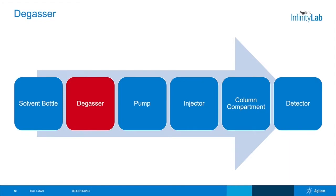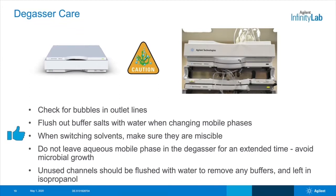Next, let's talk a little bit about the degasser in your LC system. Once we have our solvent properly prepared, it'll go into the degasser. Be aware that there are different degasser types that use different technologies. Some newer degassers perform better and are easier to flush due to design improvements. On most LC instruments, the mobile phase flows through a vacuum degasser, which might be a separate module or integrated into the pump. You will always want to keep an eye out for bubbles in the outlet lines, especially when changing solvents. If you're using buffer salts, you'll want to avoid blockages in the degasser tubing by flushing them out with water when changing mobile phases. When switching solvents, make sure that they are miscible.